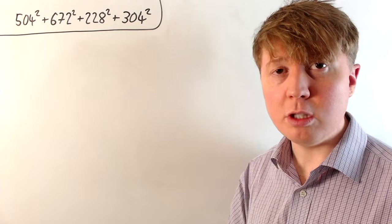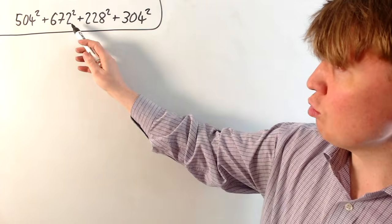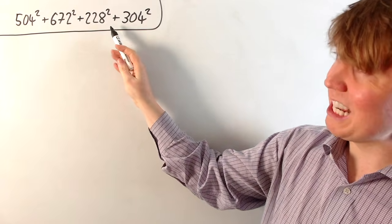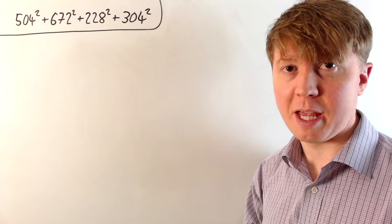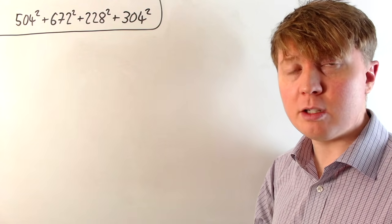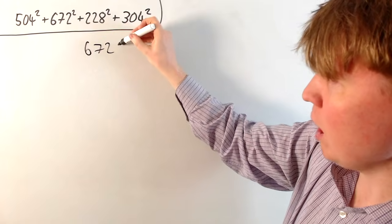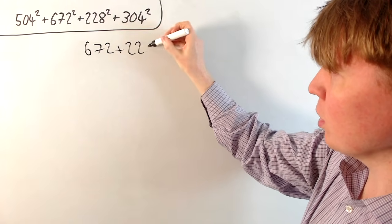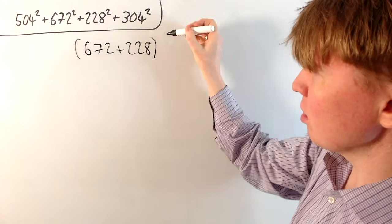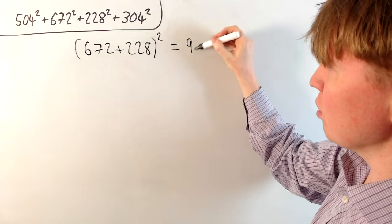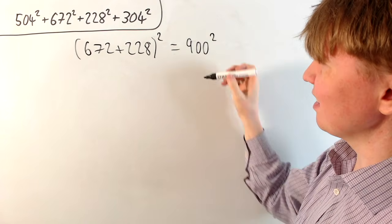The first thing you might notice about these numbers is 672 and 228. The 72 and 28 are complements to make 100. So if we were to add these two together, we'd actually get 900. And we could even square this. So 672 plus 228 all squared would just be 900 squared, which is something we can calculate quite easily.